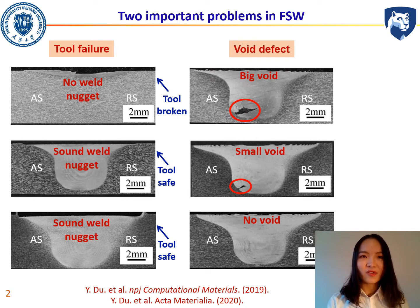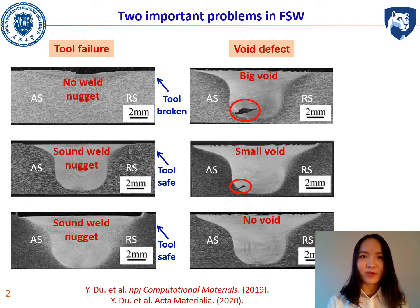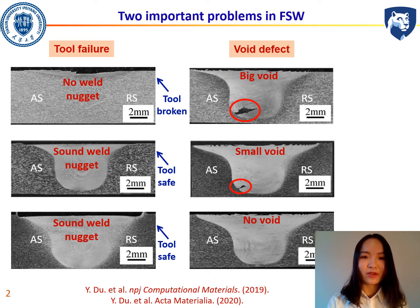As we know, friction stir welding is a solid-state joining process that uses a non-consumable tool to join two work pieces together without melting the alloys. The material is heated up to its thermoplastic state to flow around the tool. There are two most important problems in friction stir welding: the first one is tool failure and the second is void defects.